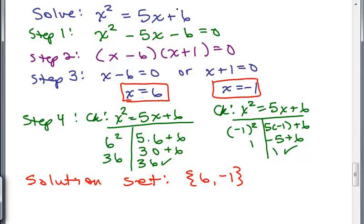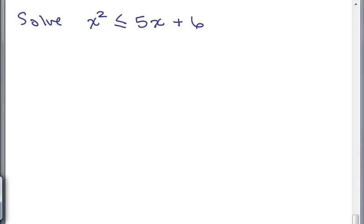In this polynomial equation of degree 2, with X squared as the highest exponent, we get at most two solutions. Now let's change this up. Instead of X squared equals 5X plus 6, what if we are asked to solve X squared is less than or equal to 5X plus 6? This means X squared equals 5X plus 6 or X squared is less than 5X plus 6, so it will have at least the two solutions from before.